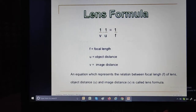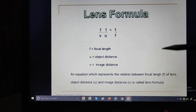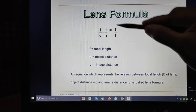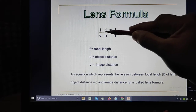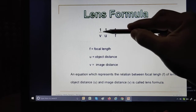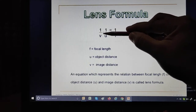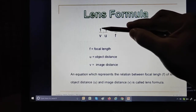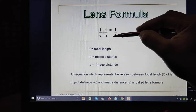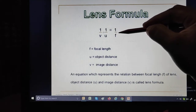In this lens formula we use the minus symbol. But in the mirror formula, the symbol changes: mirror formula is 1/V plus 1/U equals 1/F — here minus is replaced by plus. Whereas the lens formula is 1/V minus 1/U equals 1/F. This is the key difference between the two formulas.